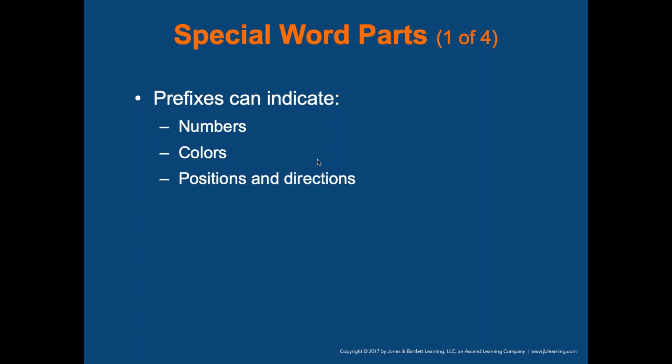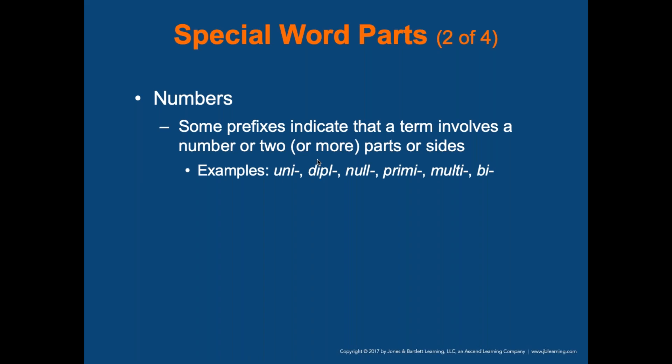Prefixes can also indicate numbers, colors, positions, or directions — like pronation versus supination, inferior, posterior, and things like that. We're going to look at different word parts and directions, including prefixes for numbers indicating a term involves two or more parts or sides.